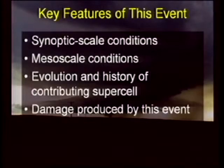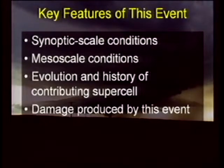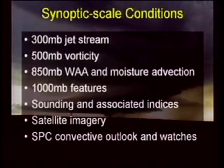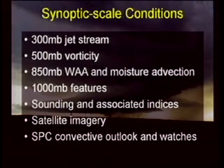Let's look at a case study from a tornado event. This was April 8, 1988 — a central Alabama tornado. We'll look at some broad synoptic scale conditions, just looking at where troughs and ridges are. We'll do a quick examination of the mesoscale conditions, look at the evolution and history of the supercell that produced this tornado, and then look at some of the damage produced. Synoptic scale conditions: we'll look at the 300 millibar jet stream, 500 millibar vorticity, 850 millibar warm air and moisture advection, features at 1,000 millibars as a proxy for the surface, soundings and associated indices, satellite imagery, and the convective outlooks from SPC.